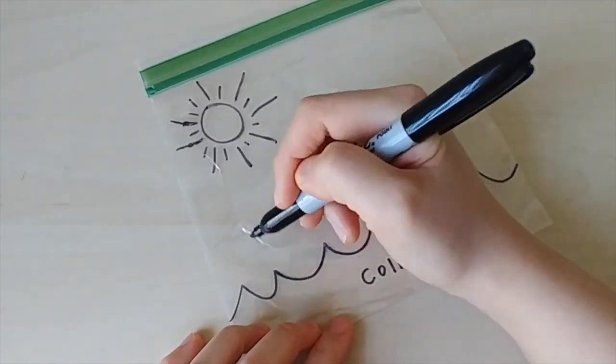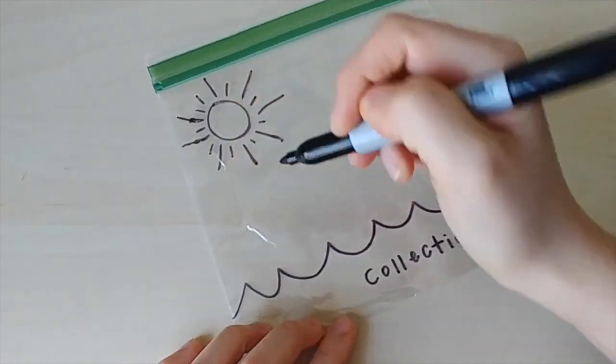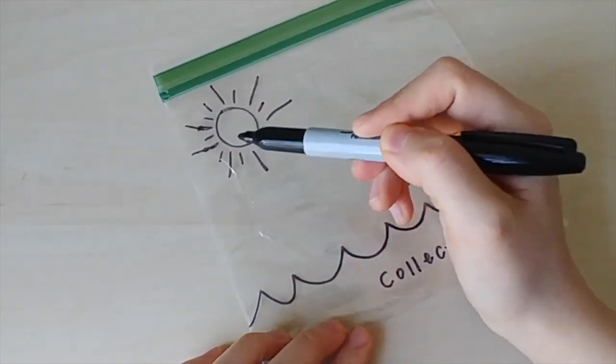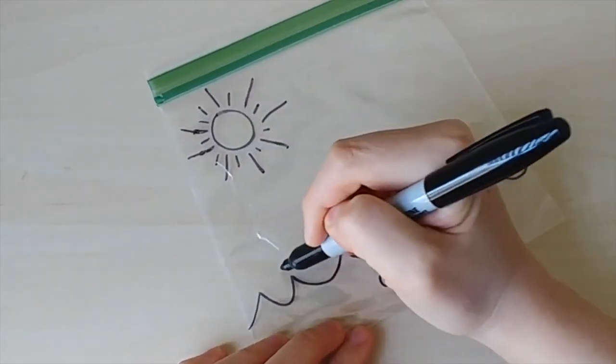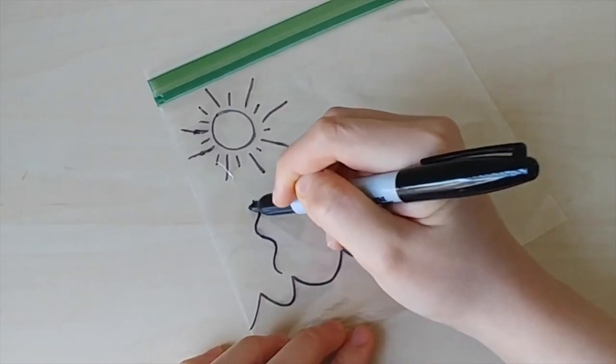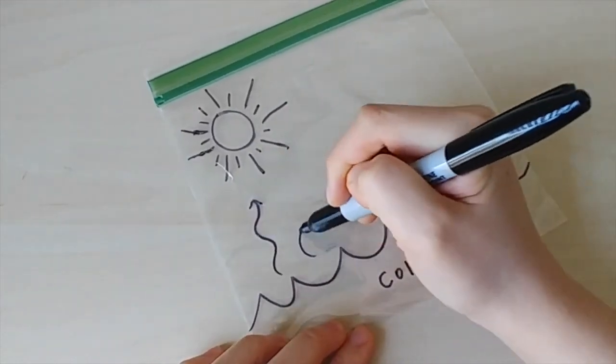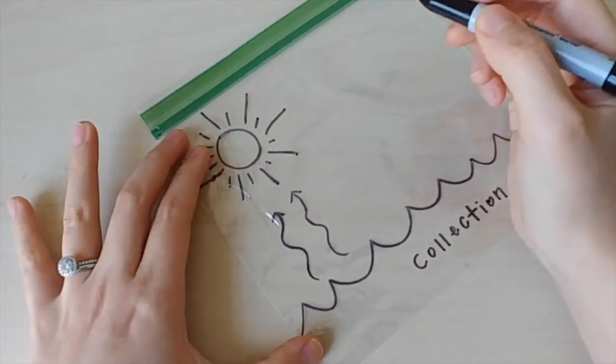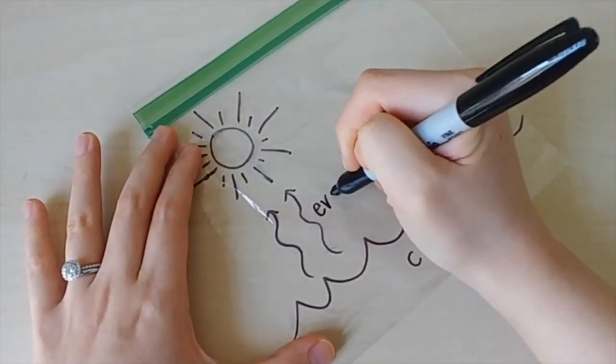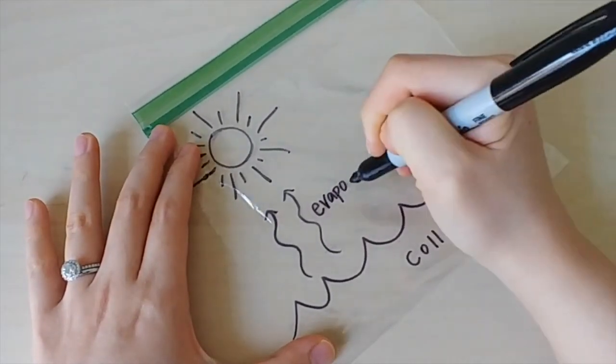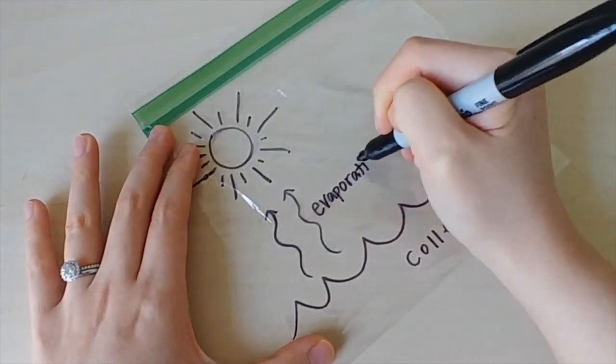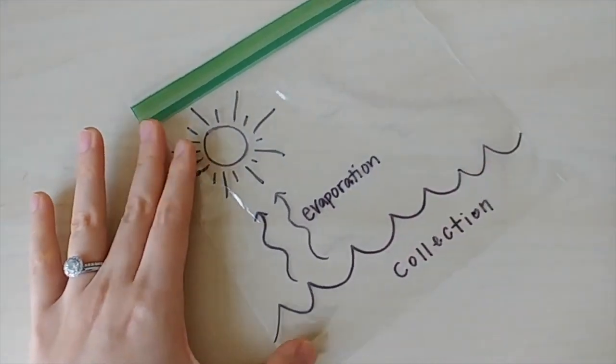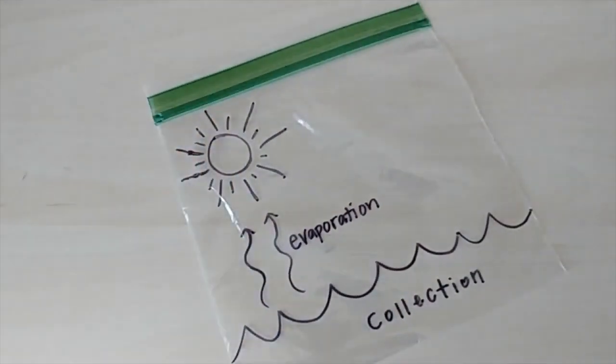Now when the sun heats the water, how does the water move? It undergoes evaporation. This is when liquid water changes to the gas form of water, also known as water vapor. So we'll draw some curved arrows to represent this and label evaporation, E-V-A-P-O-R-A-T-I-O-N.